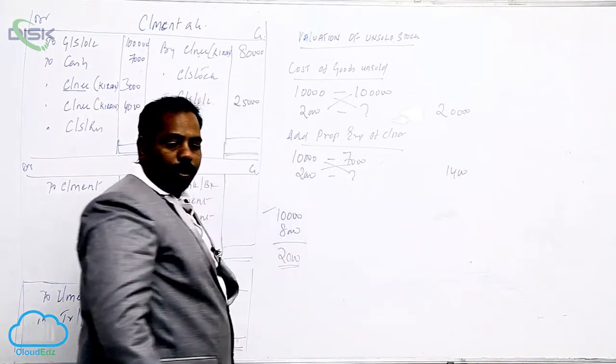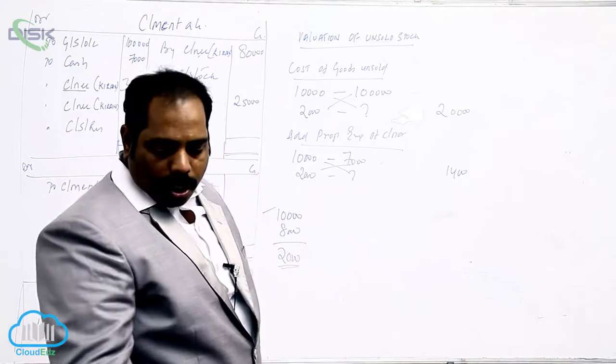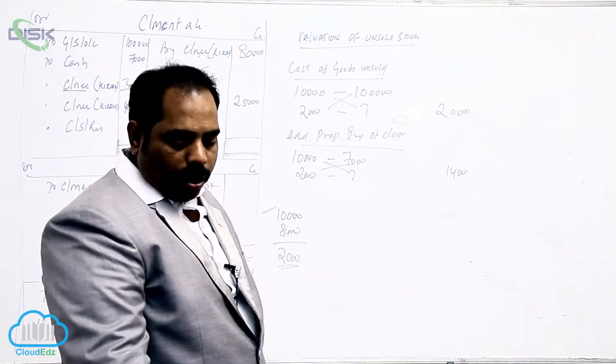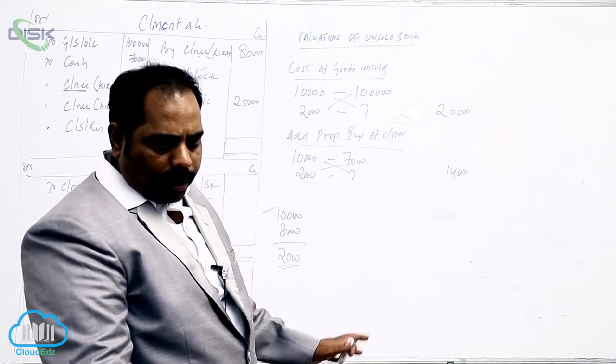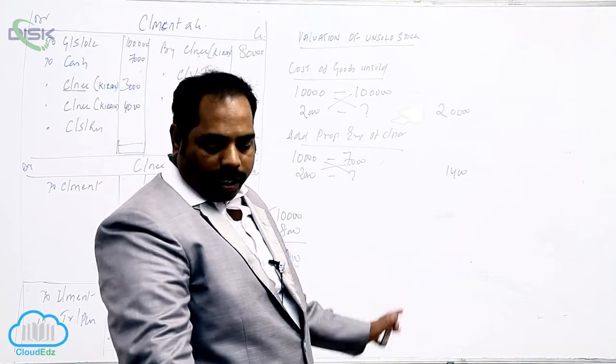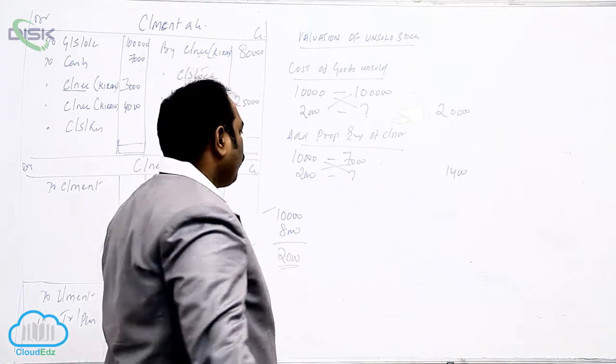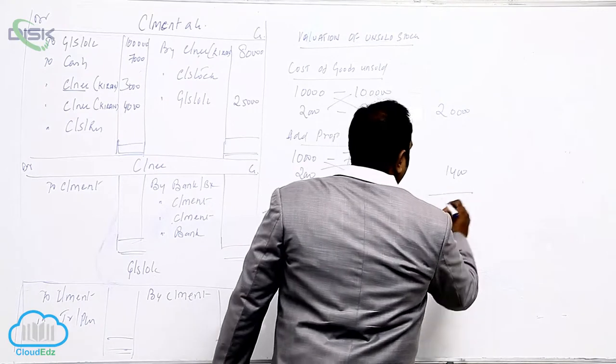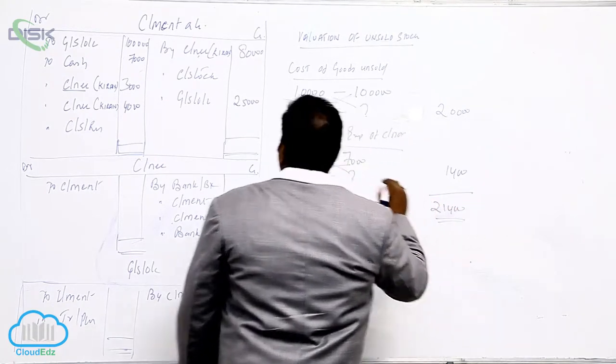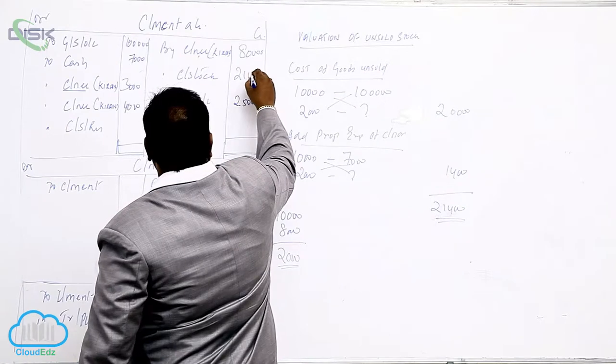Now take proportionate expense of consigning. Did he mention he has a non-recurring expense? No, he did not mention any expenditure. So it is always recurring expense, leave it off. So 21,400. 21,400 is what? Consignment stock.